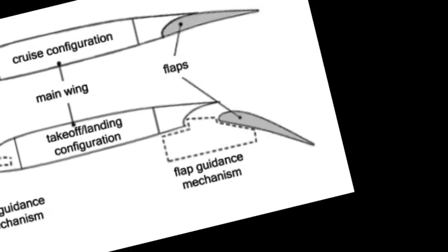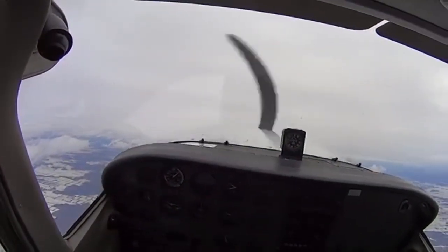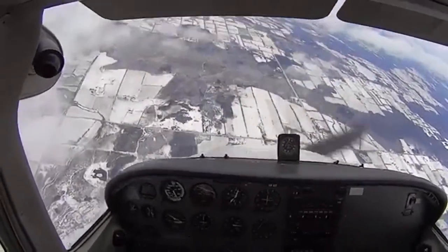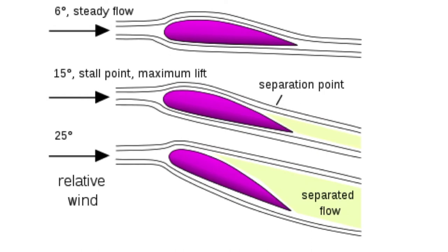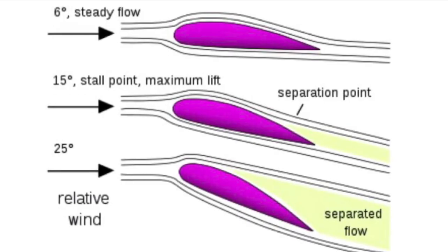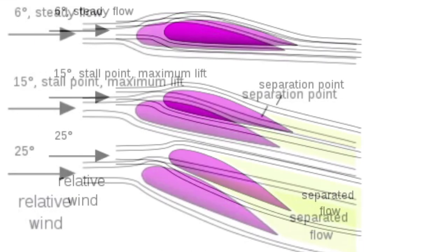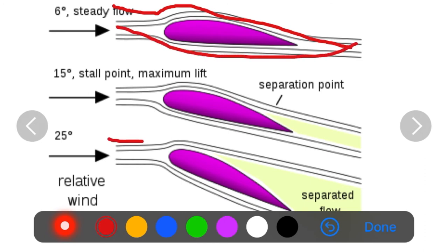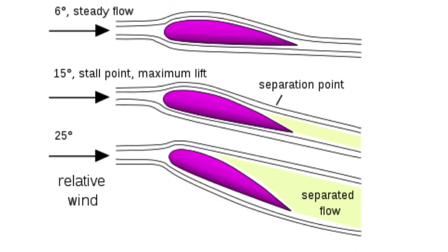Next let us look at stalls. A stall is a reduction in the lift being produced by the wing as the angle of attack passes the critical angle — when the aircraft's nose is pitched high and the airflow on top of the wing breaks away and drag increases. In level flight, air meets the wing at a certain point, but when the critical angle of attack is exceeded, the airflow separates from the top and bottom of the wing, causing increased drag and loss of lift.